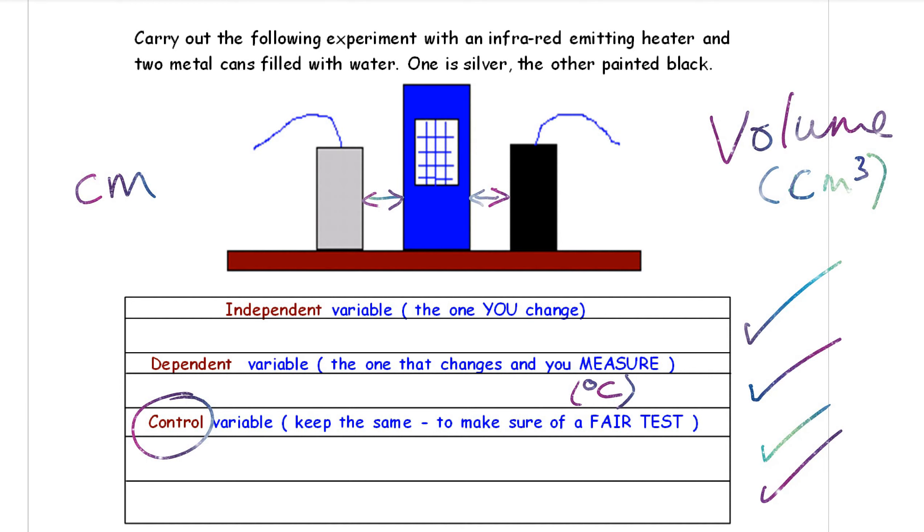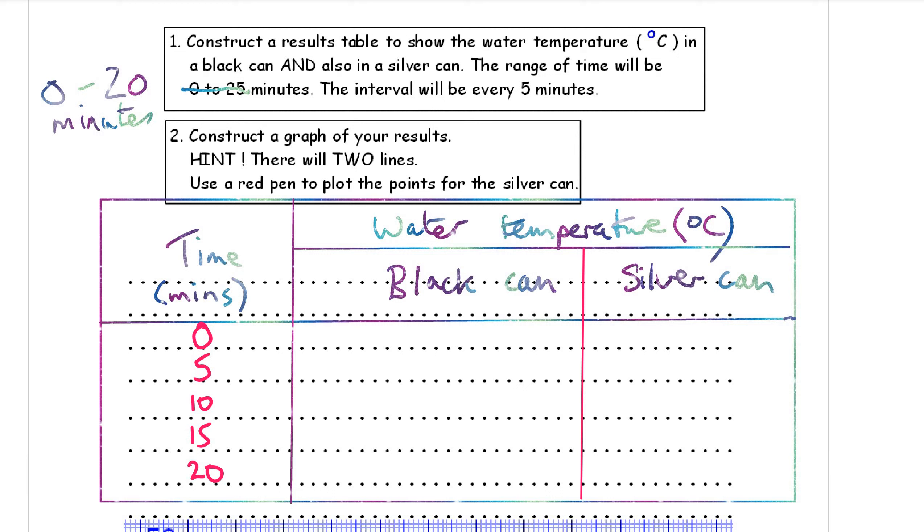Okay, so we're constructing a results table for the results of this experiment. We've got time in minutes from 0 to 20 minutes. We've got the water temperature in degrees C of the black can and of the silver can. Let's put in the data. At the start the temperature was the same, it was 20 degrees. These are the results for the silver can: after 5 minutes 21, 10 minutes 23, 15 minutes 27, and the final temperature was 31. In the black can you can see at any stage the temperature is larger, is higher.